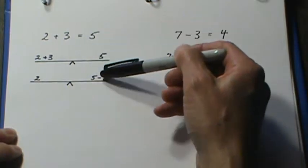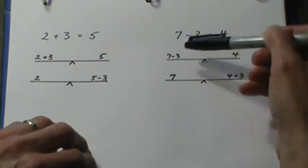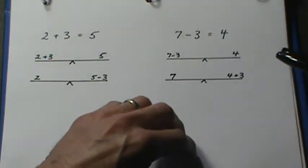The plus 3 on this side is subtract 3 on this side. The subtract 3 on the left becomes a plus 3 on the right.